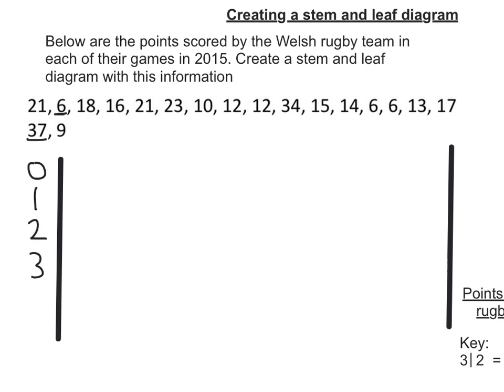Now I'm going to make an unordered stem and leaf diagram. So let's just go through and work these through. So 21 — that's going to be 2 and 1. 6 — 0 and 6. 18 — 1 and 8. 16 — 1 and 6. 21 — 2 and 1. 23 goes there. 10 — 0. 12.